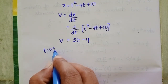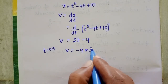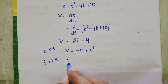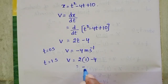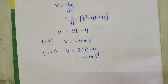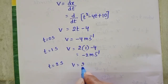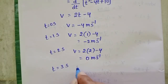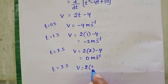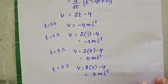When t = 0, v = minus 4 m/s. When t = 1 second, v = 2(1) minus 4 = minus 2 m/s. When t = 2 seconds, v = 2(2) minus 4 = 0 m/s. When t = 3 seconds, v = 2(3) minus 4 = 2 m/s.